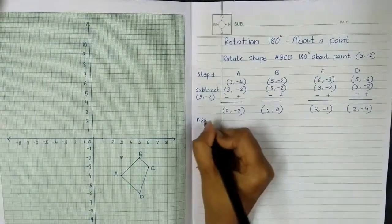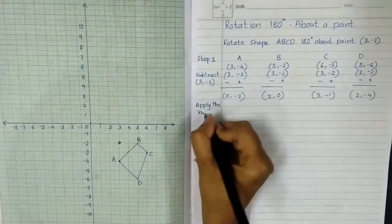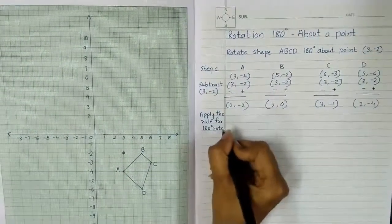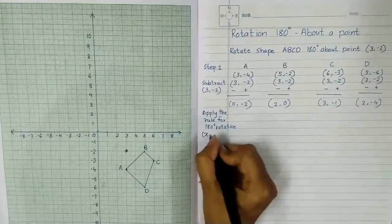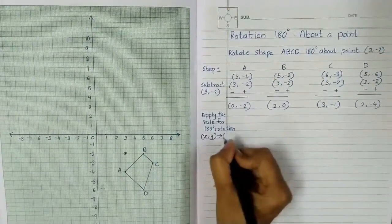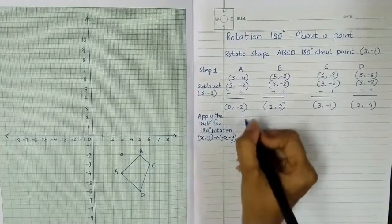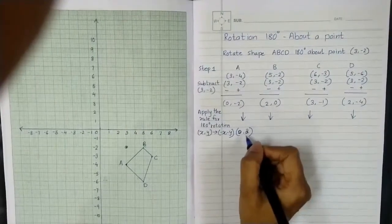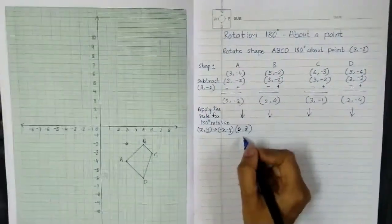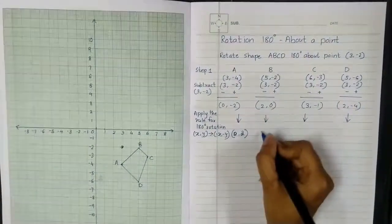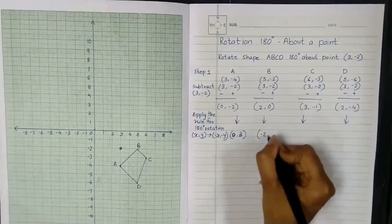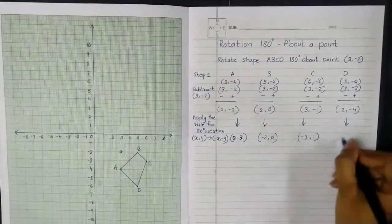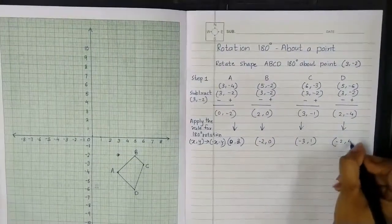Next step: apply the rule for 180 degree rotation. The rule is x, y turns to -x, -y. After applying the rule and changing the sign of both x and y coordinates, I get: A gives (0, 2), B gives (-2, 0), C gives (-3, 1), and D gives (-2, 4).